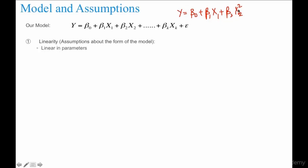However, the relationship between y and x squared will not be linear. The relationship between y and the parameters, which is beta 0, beta 1, beta 2, etc., that should be linear.